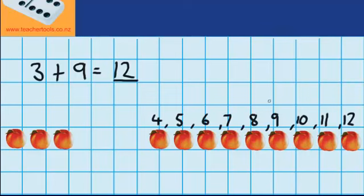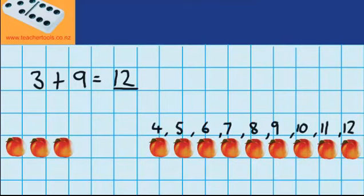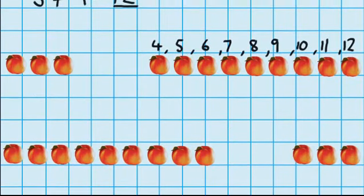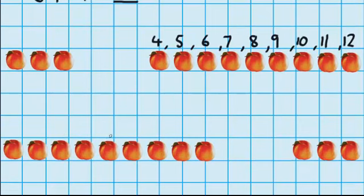Now let's see what would happen if we counted on from the bigger number instead. So if we go down a little bit, this time I've changed them around. So here's my big pile of nine, and here's my pile of three.